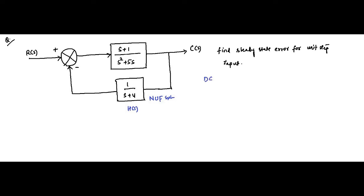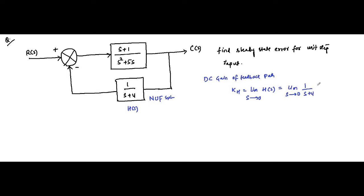First, we have to determine the DC gain of the feedback path, K_H. H(s) is a type 0 system with no poles at the origin, so it will simply be the limit as s tends to 0 of H(s). That gives us the limit as s tends to 0 of 1/(s+4), which equals 1/(0+4) = 1/4. So K_H = 1/4.